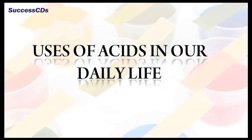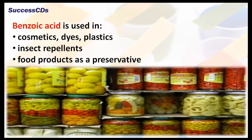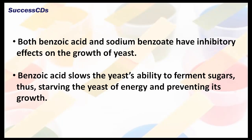Now let's see the uses of acids in our daily life. Let's begin with benzoic acid. It is used in cosmetics, dyes, plastics, and insect repellents. It is also used as a preservative in food products. Both benzoic acid and sodium benzoate have inhibitory effects on the growth of yeast, which is a major cause of food spoilage. Benzoic acid slows the yeast's ability to ferment sugars, thus starving the yeast of energy and preventing its growth.